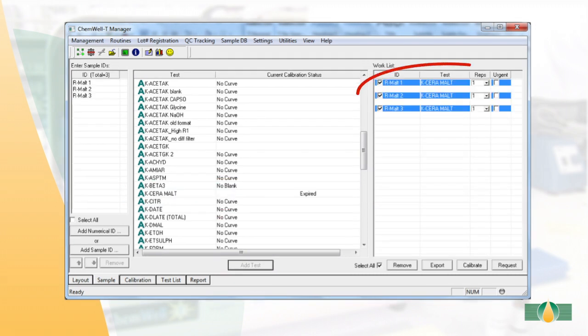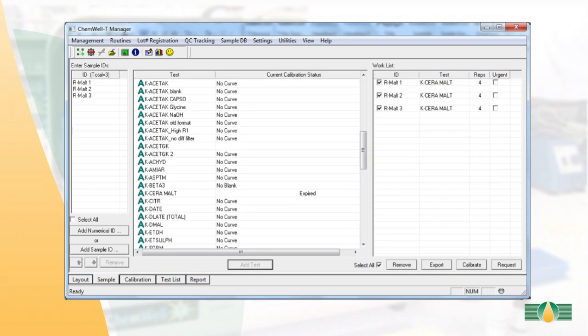A list of the tests will appear on the right-hand column. Select the required number of replicates—in this example, we are performing quadruplicates—and then select request.